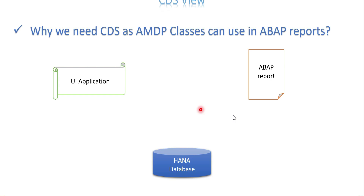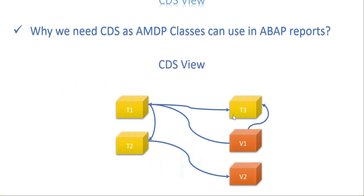First, let's talk about CDS views. A CDS view is basically just a view — it connects tables and other views if required. It connects more than one table or view and finally gets the data. So a CDS view connects different data sources and retrieves data based on the business requirement.